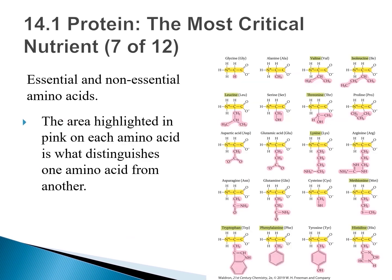In the diagram of 20 amino acids, the part shown in pink is the side chain that extends from the protein backbone. The atoms of each amino acid that become part of the backbone are highlighted in yellow. The names of the essential amino acids are highlighted in green, and the rest are non-essential. The three-letter abbreviation for each amino acid is given in parentheses.